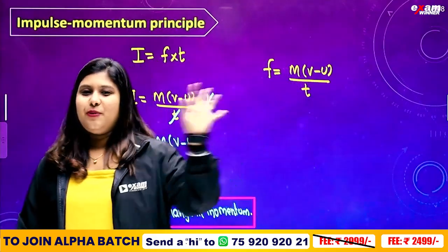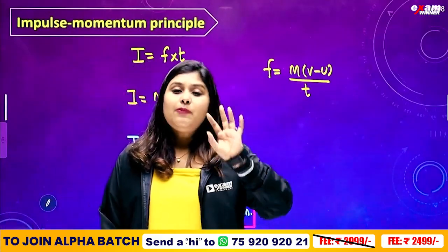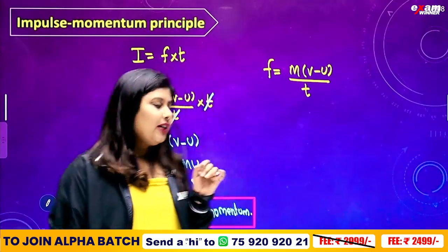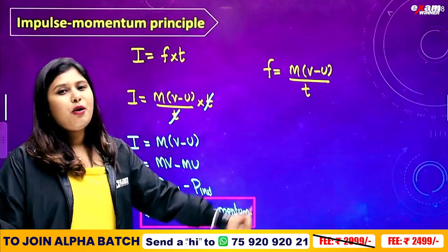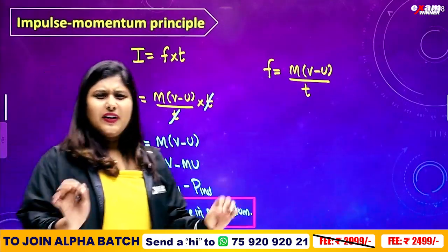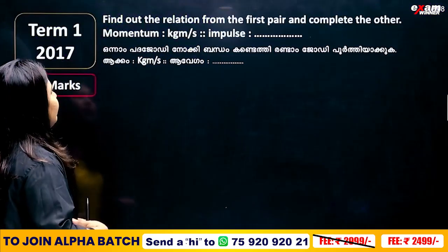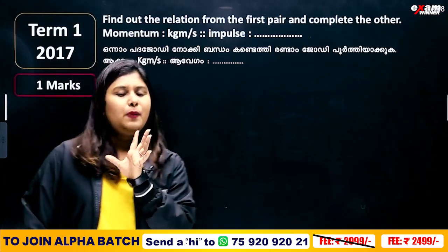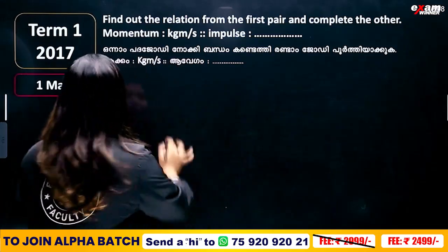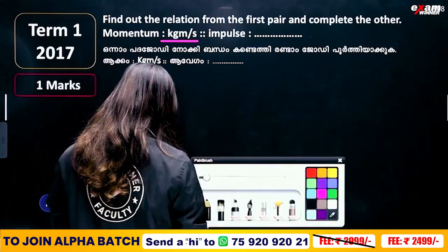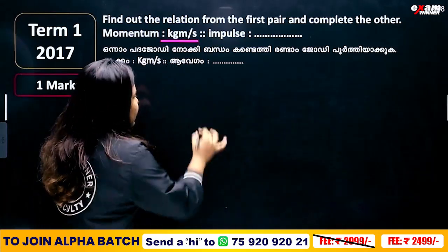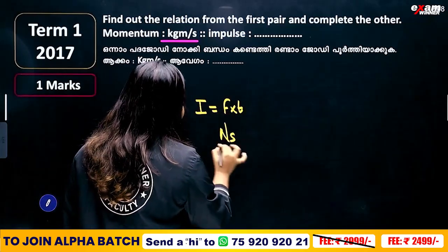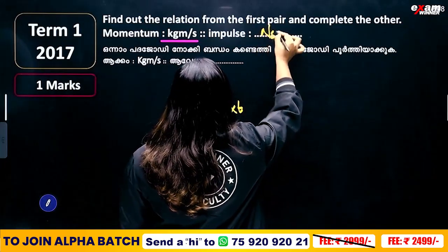Okay, so the impulse-momentum principle states that impulse equals change in momentum. The unit of momentum is kilogram meter per second, and the unit of impulse is Newton-second. Both are equivalent. Newton-second is the unit of impulse.